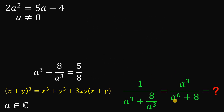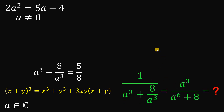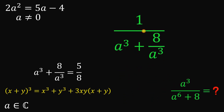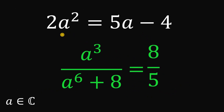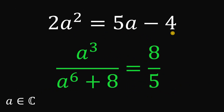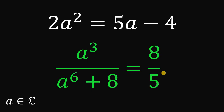Using this result, the denominator in our expression is 5/8. So the full expression becomes 1 over (5/8), which equals 8/5. Therefore, given 2a² = 5a - 4 where a is a complex number, the numerical value of a³ over (a⁶ + 8) is 8/5.